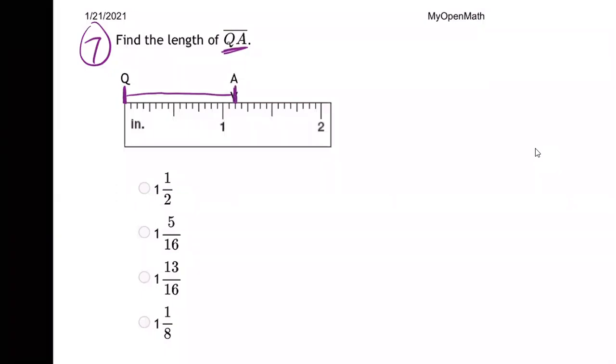That's what that little arrow is indicating. So QA is this length here, and the question is how long is line segment QA?